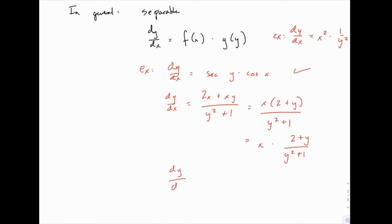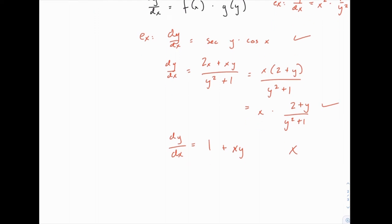Here's an example of one that is not separable: 1 plus x times y. That one is not separable because try as you might, there's no way to write that as strictly a function of x times a function of y. Or if we had something like x plus y. That again cannot be written as a function of x times a function of y.